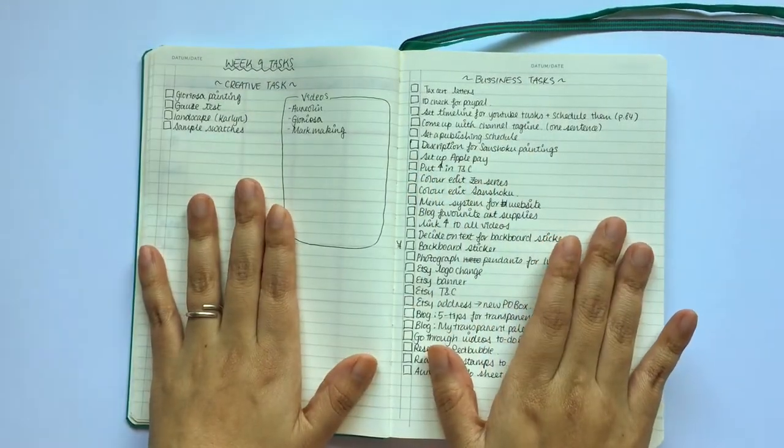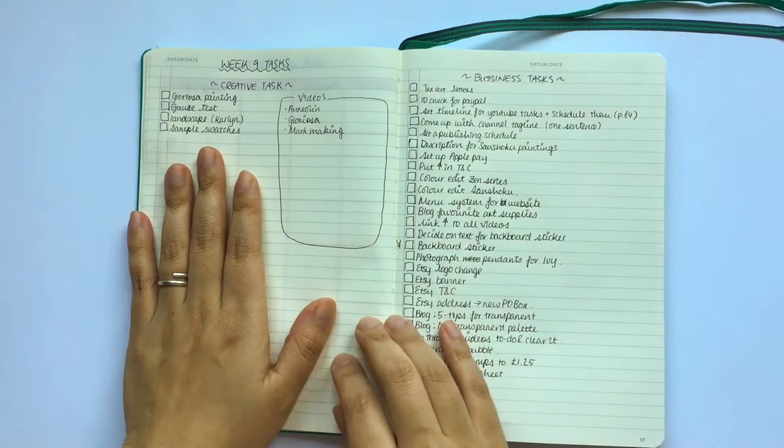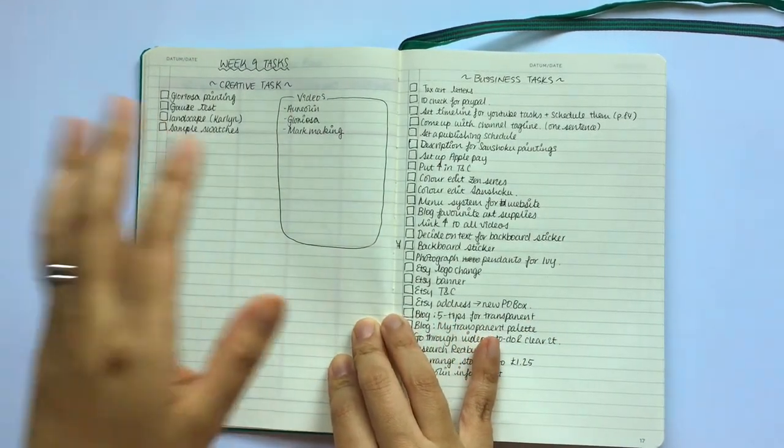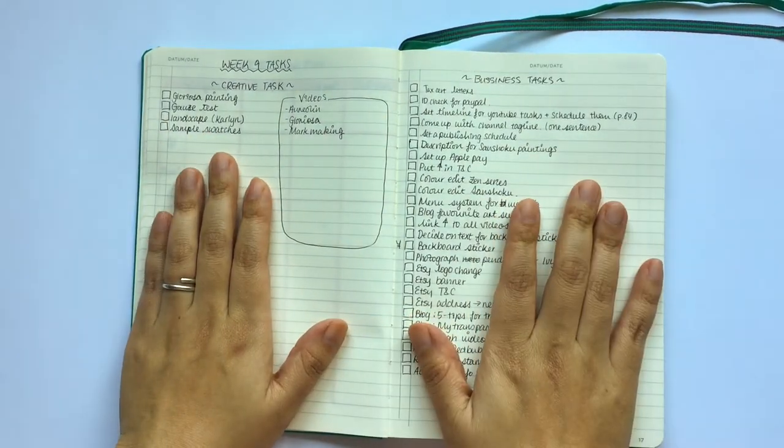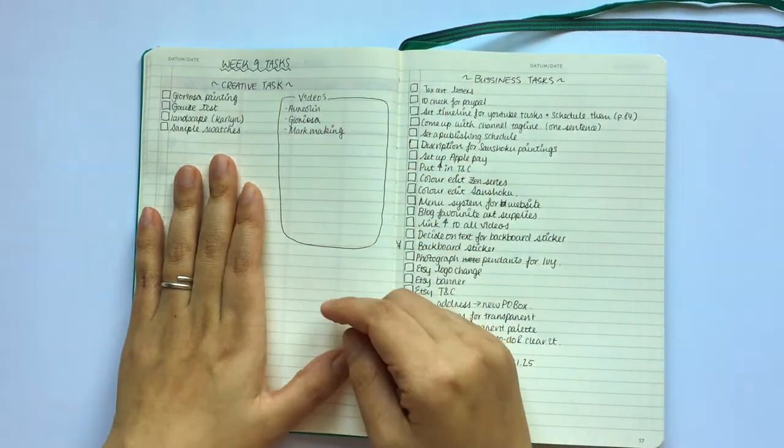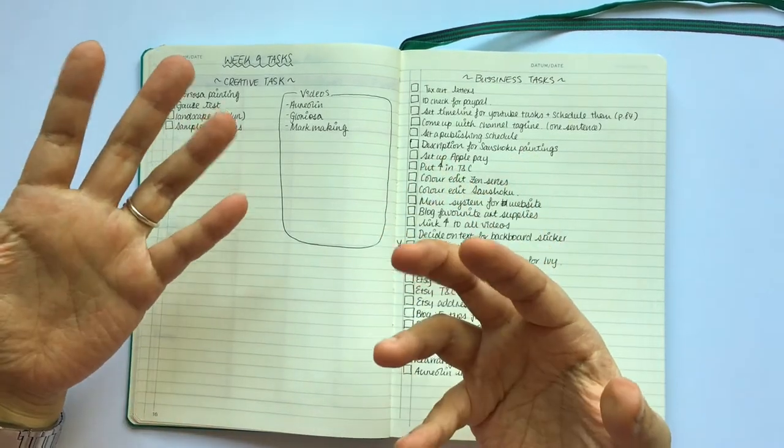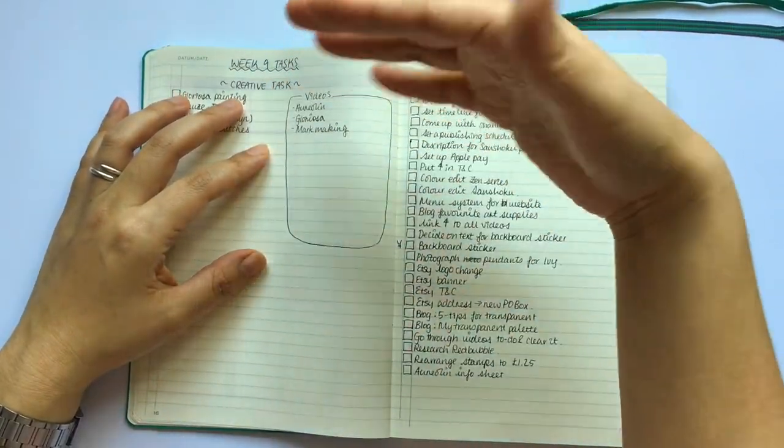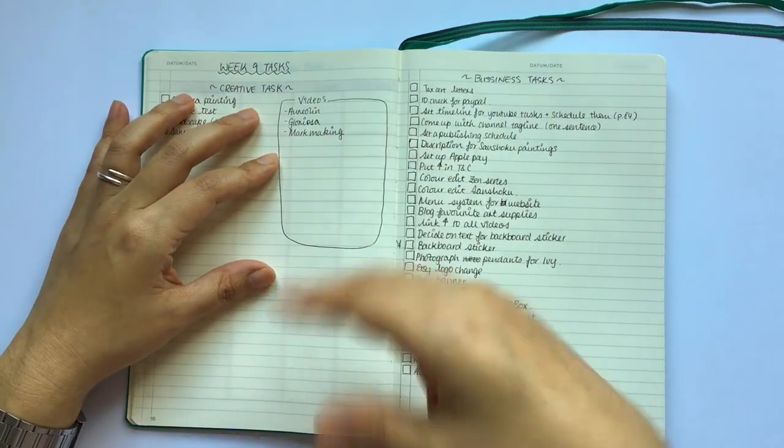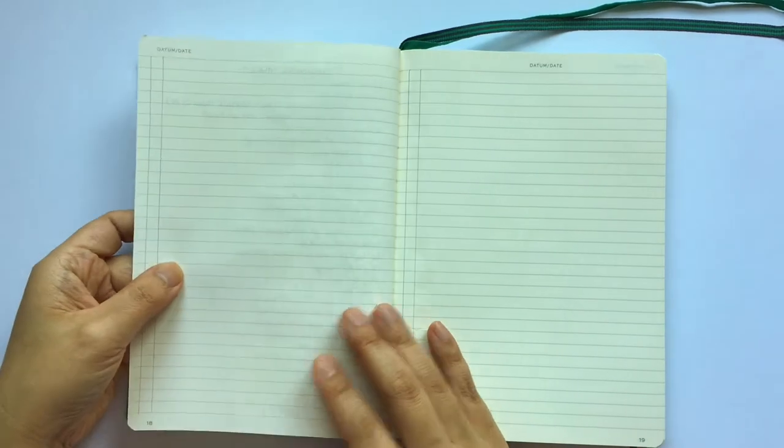Then as usual my weekly task page, which I save four pages for just in case. Broken down into creative tasks and business tasks. And I've just started a little section called videos for videos that I have started and haven't finished, or just want to keep at the front of my mind to make sure those videos are starting to happen. And that's it.